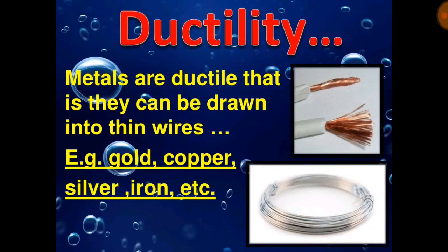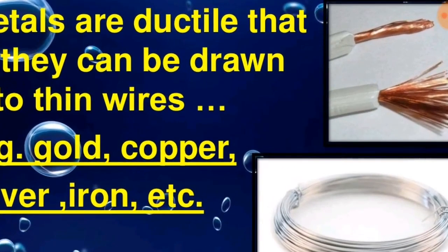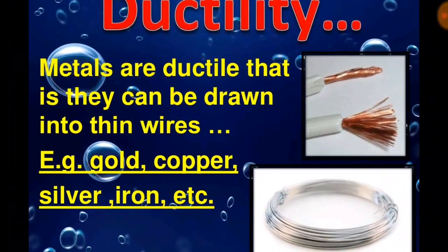Ductility. Metals are ductile, that is they can be drawn into thin wires. The thin wires are used in electrical appliances. Examples include gold, copper, silver, and iron for making coils or for electrical appliances.